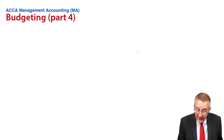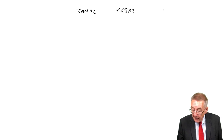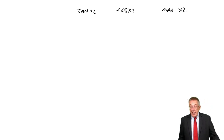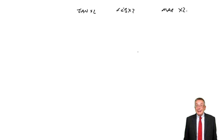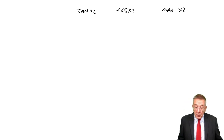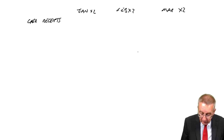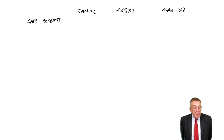Let's do it as columns — cash budgets for January X2, February X2, March X2. What I'm going to do is list the receipts each month first, then list the payments each month, and we can work out what's happening to the balance. So let's first look to see what the cash receipts are each month. The only receipts we're going to have here are those from sales.